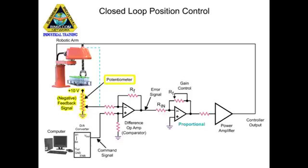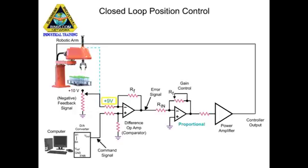The potentiometer attached to the robotic arm in the circuit indicates the actual position. The variable voltage produced is referred to as the feedback signal. When the feedback signal voltage matches the command signal voltage, the arm has reached the desired position.